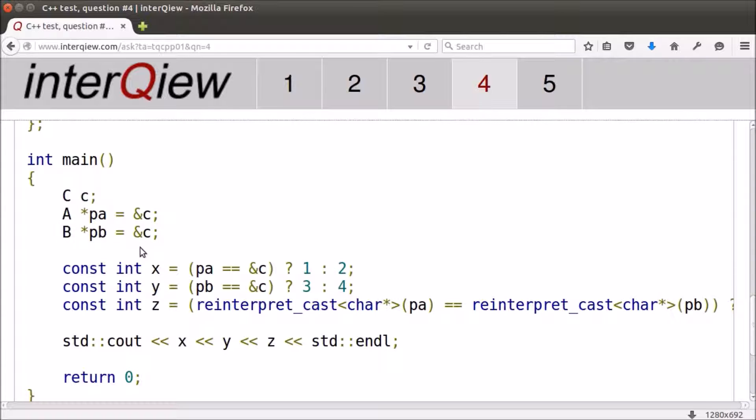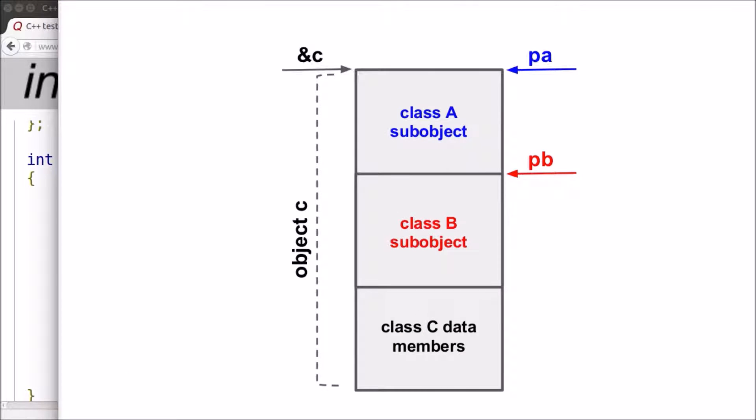In order to understand how this conversion works, let's look into the layout of object C. Object layout is about how the data members and base class objects are arranged inside derived class object. A base class object that is part of the derived class object is called sub-object.